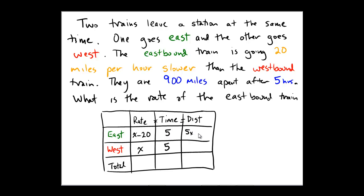On the other hand, the distance traveled by the westbound train will be its rate times time, which would be x times 5, or 5x.